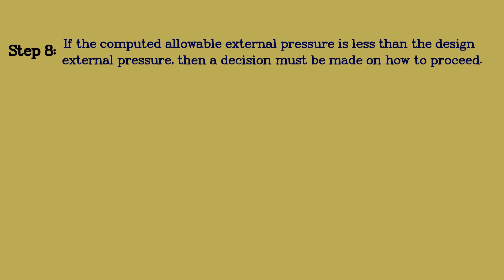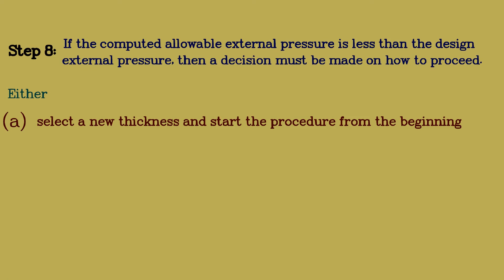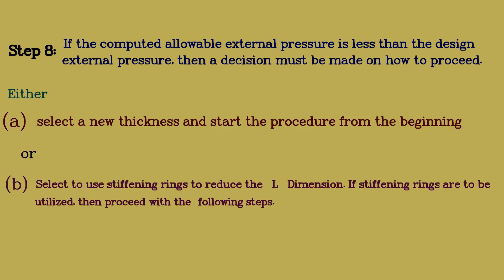In step 8, if the allowable pressure is greater than the design pressure, reduce the thickness and repeat the calculation steps until a reasonable value is obtained, considering corrosion allowance and safety factors. If the allowable pressure is less than the design pressure, either select a new thickness and start over, or utilize stiffening rings to reduce the L dimension.